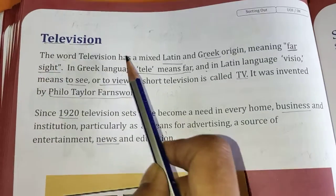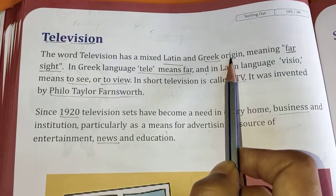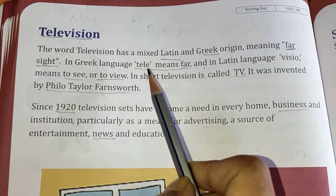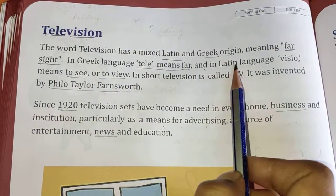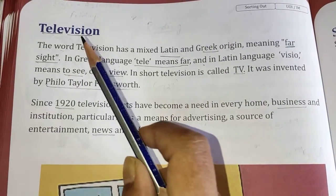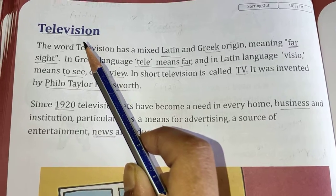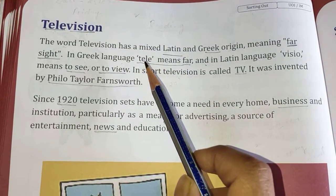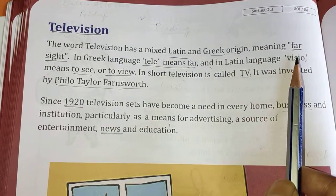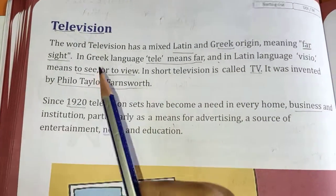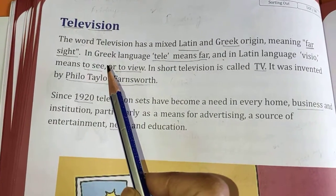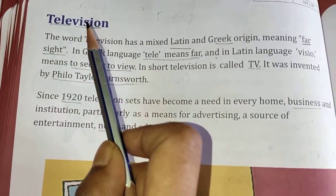The word television has a mixed Latin and Greek origin meaning far sight. In Greek language, tele means far, and in Latin language, video means to see or to view. Television is made from two words — tele and video. So, to see or to view from far — that is the meaning of television.